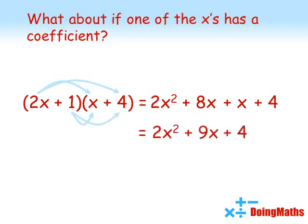Again simplifying that will give us 2X squared plus 9X plus 4.